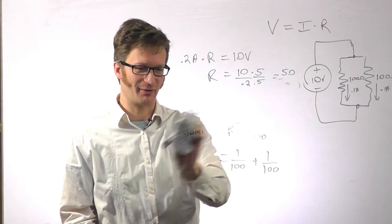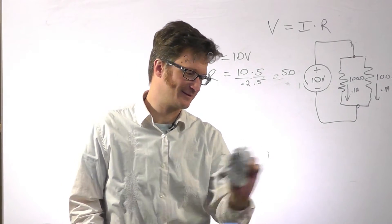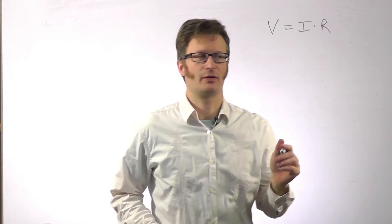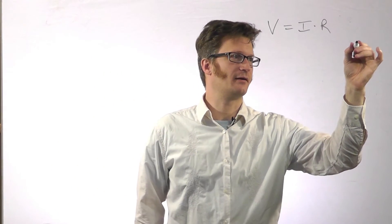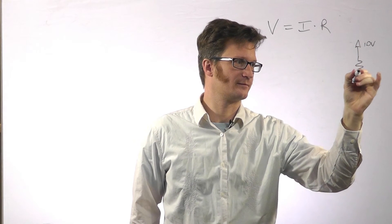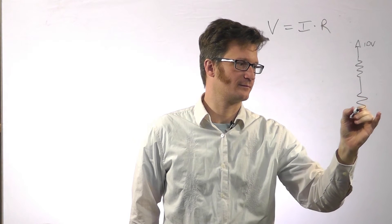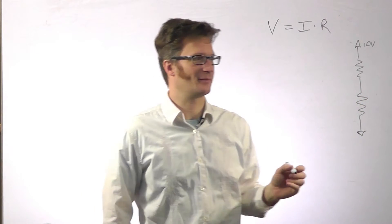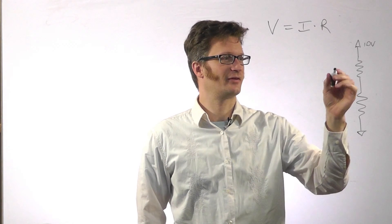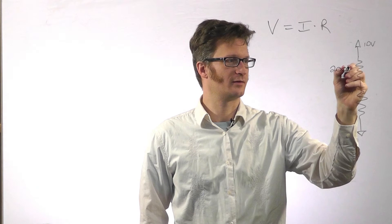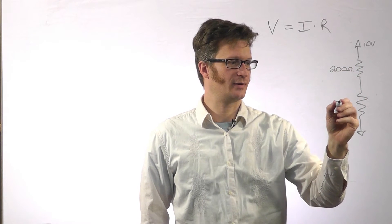All right. Bear with me while I erase here. So now let's say we have two resistors. And this one is 200 ohms and this one is 300 ohms.